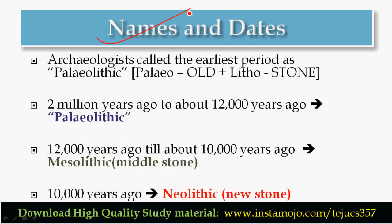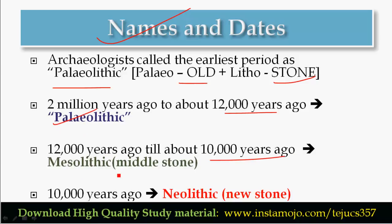Next important topic is names and dates. The archaeological term is Paleolithic — meaning Old Stone Age. The Paleolithic period spans roughly 2 million years ago. About 10,000 years ago came the transition to later periods. The New Stone period is called the Neolithic period.